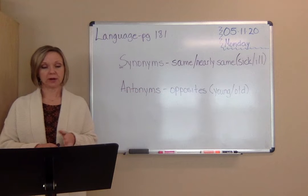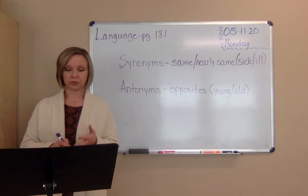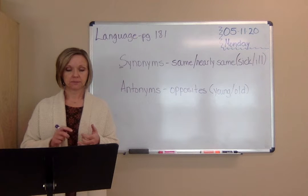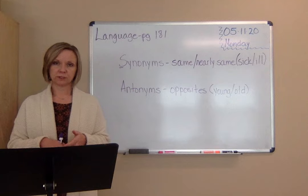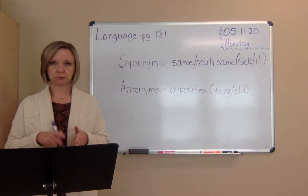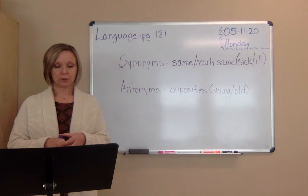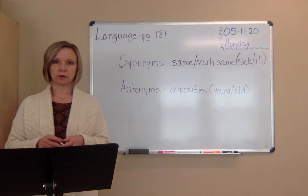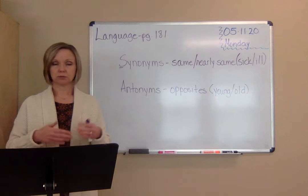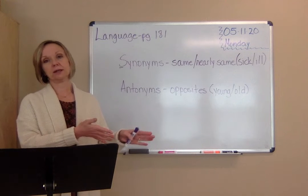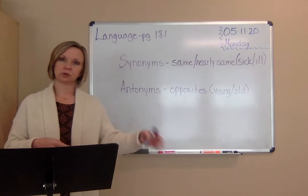Remember A is using proofreader marks for which letters should be capitalized. Remember B is writing your titles of respect with capital letters and periods where they need to go. Remember C is reviewing common and proper nouns. Common nouns are a person, place, or thing. Proper nouns name a particular person, place, or thing.